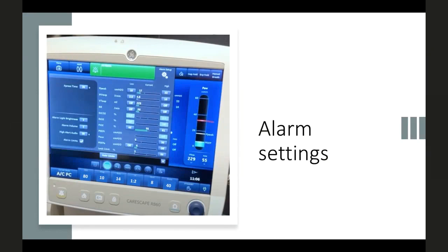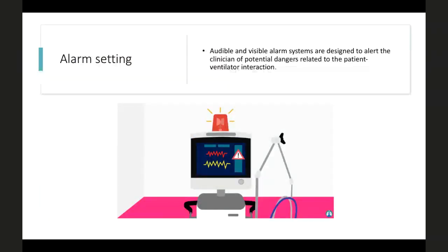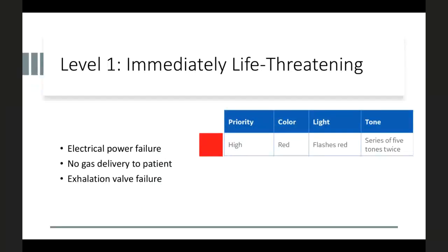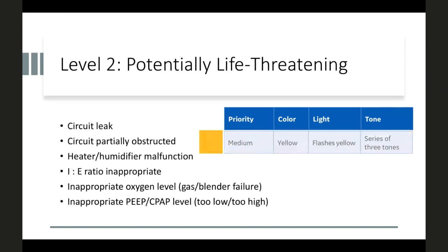During initial ventilator settings, alarm settings are also important. Alarms are audible and visible systems designed to alert clinicians of patient-ventilator interaction dangers. Level 1 (red): immediately life-threatening — electrical power failure, no gas delivery, or exhalation valve failure. Level 2: potentially life-threatening — circuit leaks, kinked circuit, HME malfunction, inappropriate settings, incorrect oxygen level, gas blender failure, or inappropriate PEEP/CPAP level.